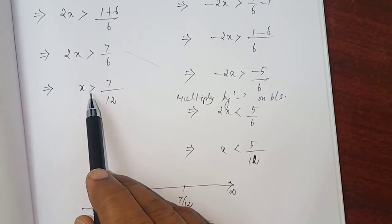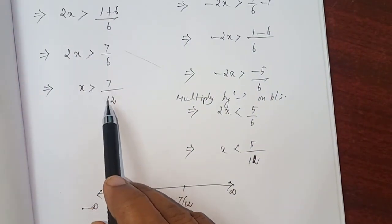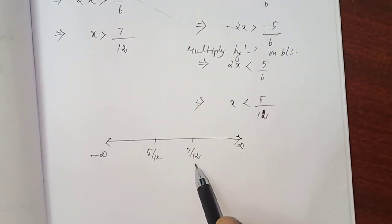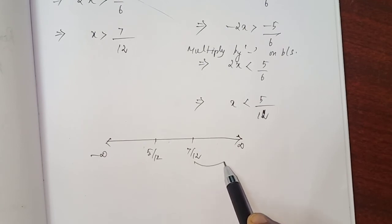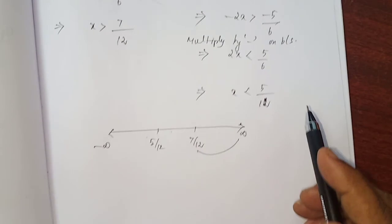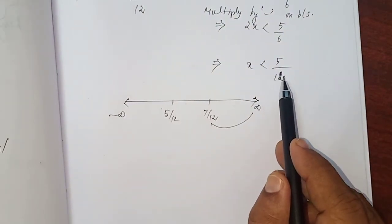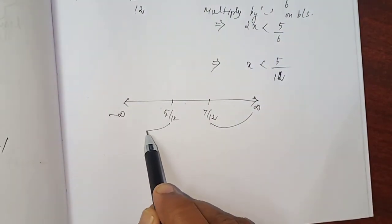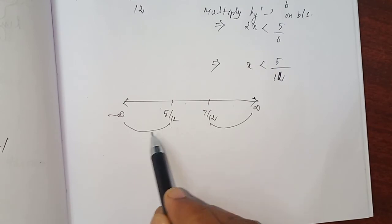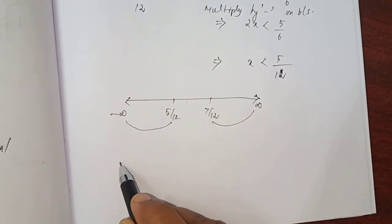Here, look at that symbol: x greater than 7 by 12. x greater than 7 by 12 means in this region, x belongs to this region greater than 7 by 12. And x less than 5 by 12 means in this region, left hand side of 5 by 12. Now you can write x solution.